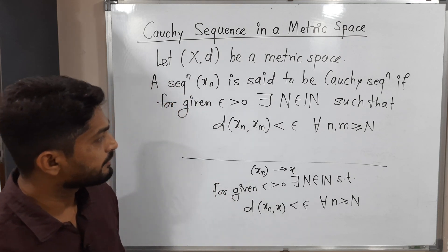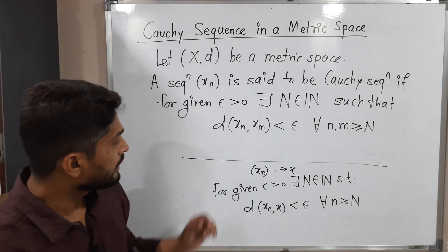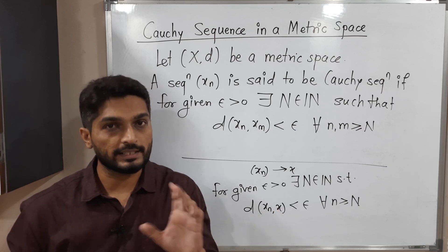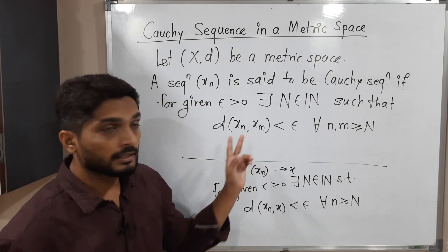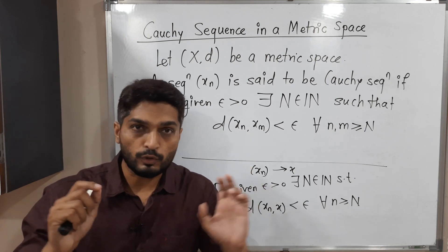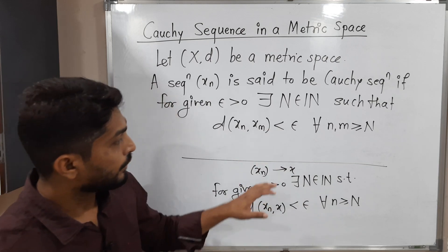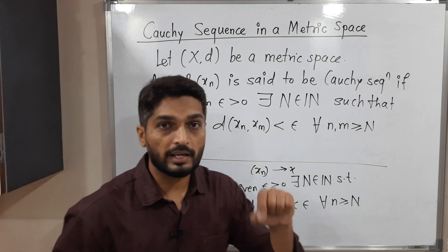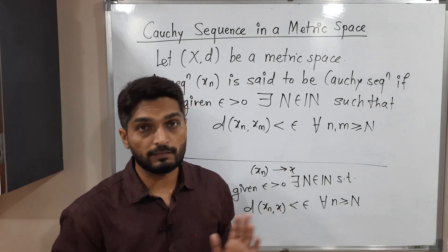Can you guess the difference between these two definitions? Up to the 'such that' part, both definitions look the same. In the definition of convergent sequence, we have one fixed point x and we find the distance between x_n and x, which is less than epsilon. But in Cauchy Sequence there is no fixed point — x_n and x_m are both terms of the sequence, and we say the distance between them is less than epsilon, with both n and m greater than or equal to capital N.